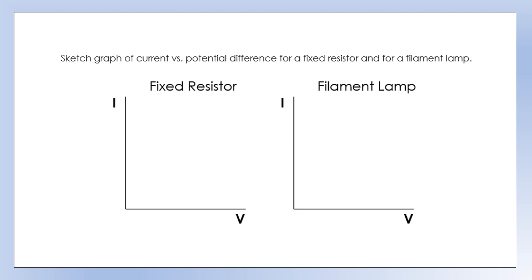Looking at how different components behave: a fixed resistor produces a directly proportional graph between current and potential difference. A filament lamp produces a graph with a decreasing gradient, indicating that its resistance increases at higher potential differences.